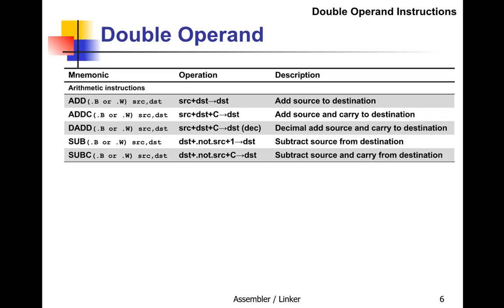DADD operates in a base-10 method even though we're using base-16 numbers. Then there's subtract: destination plus NOT(source) plus 1 goes into the destination — in other words, subtract the source from the destination. Subtract with carry subtracts the source and carry from the destination.